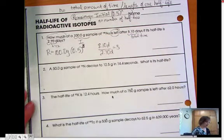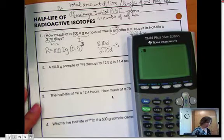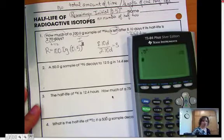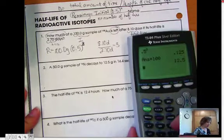And then on my calculator, I'm going to put in 0.5 raised to the third power, which is 0.125 and then multiply by 100. So our answer here is 12.5 grams.